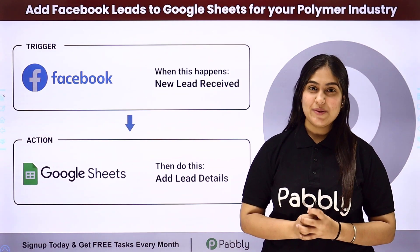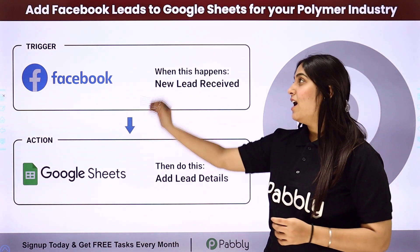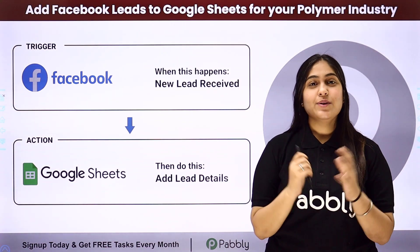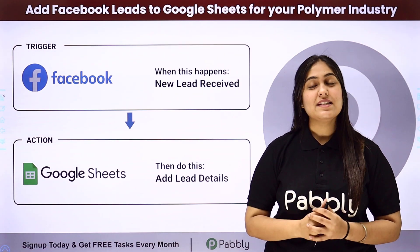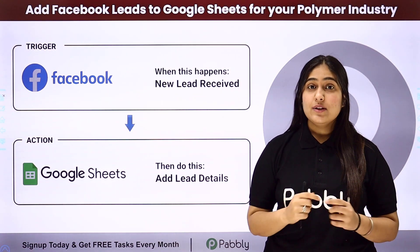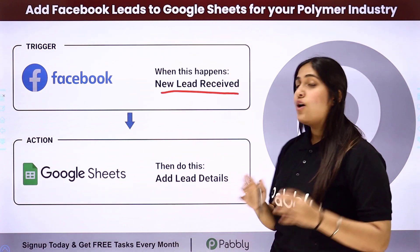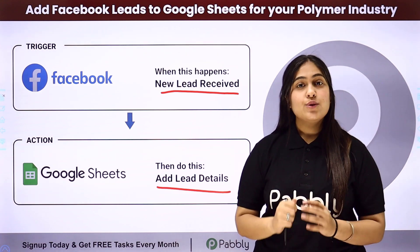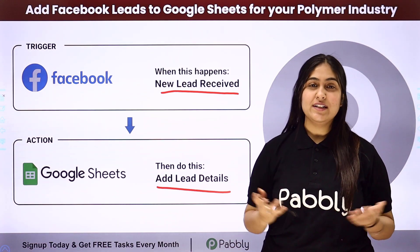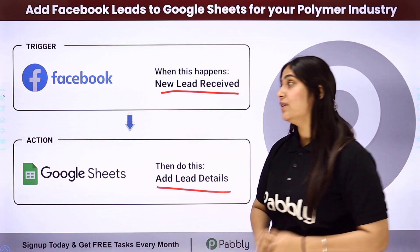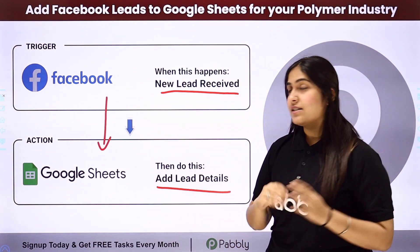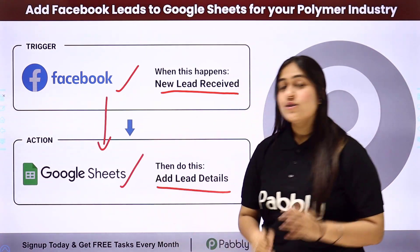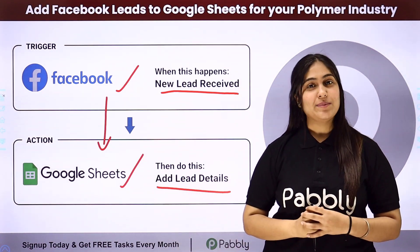Hello everyone, welcome back to Pabbly. In this video we are going to learn how to add Facebook leads to Google Sheets for your Polymer industry. I am the owner of a Polymer business and to promote my business I am running a Facebook ad. Whenever a new lead is received, automatically the details of that lead should be added in my Google Sheets as a new row. To automate this process we will use Pabbly Connect, where our trigger application will be Facebook Lead Ads and our action application will be Google Sheets.